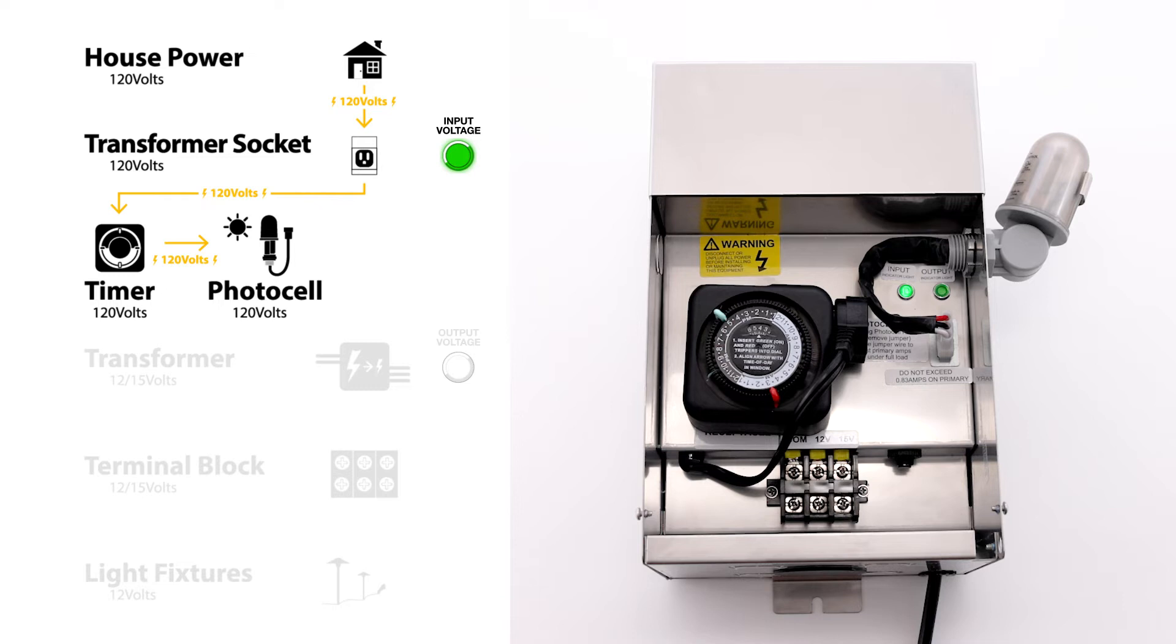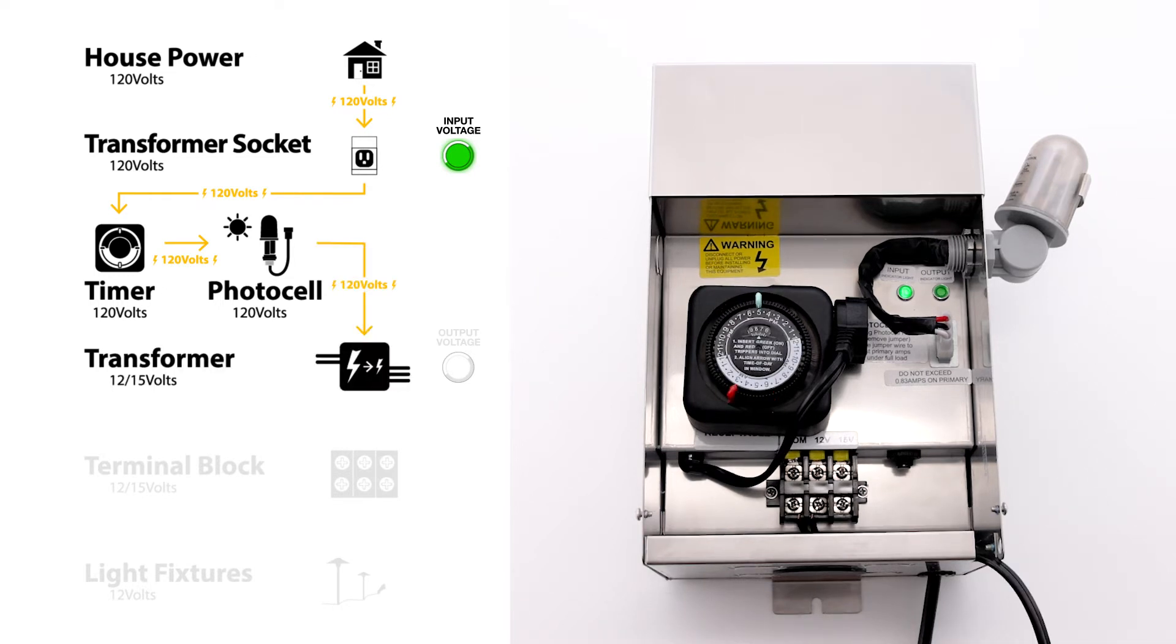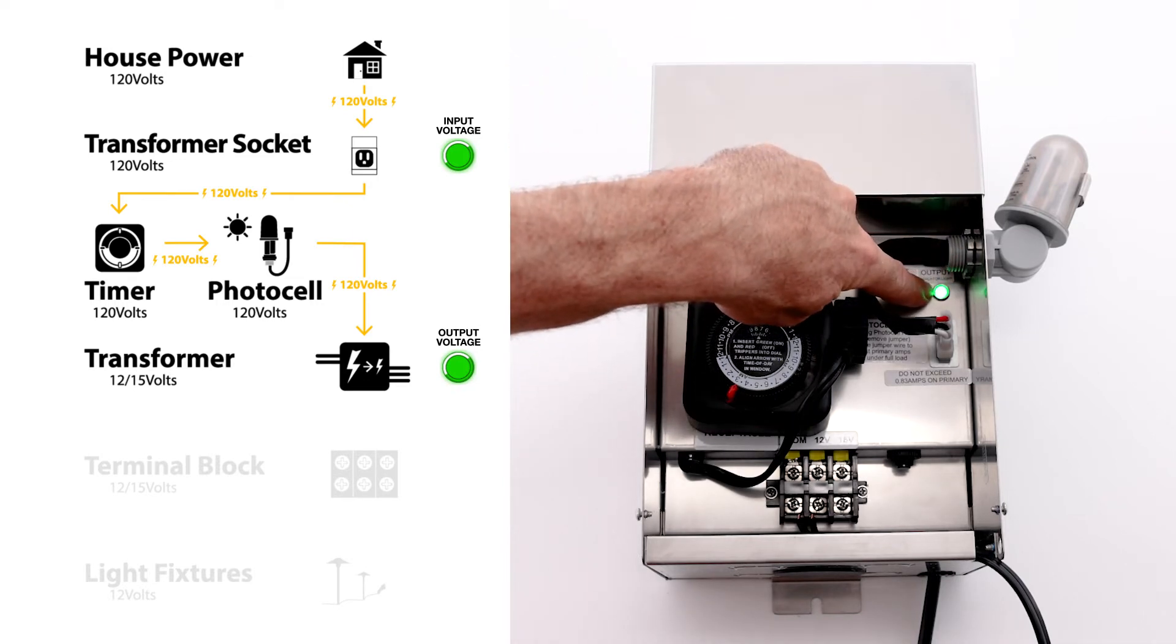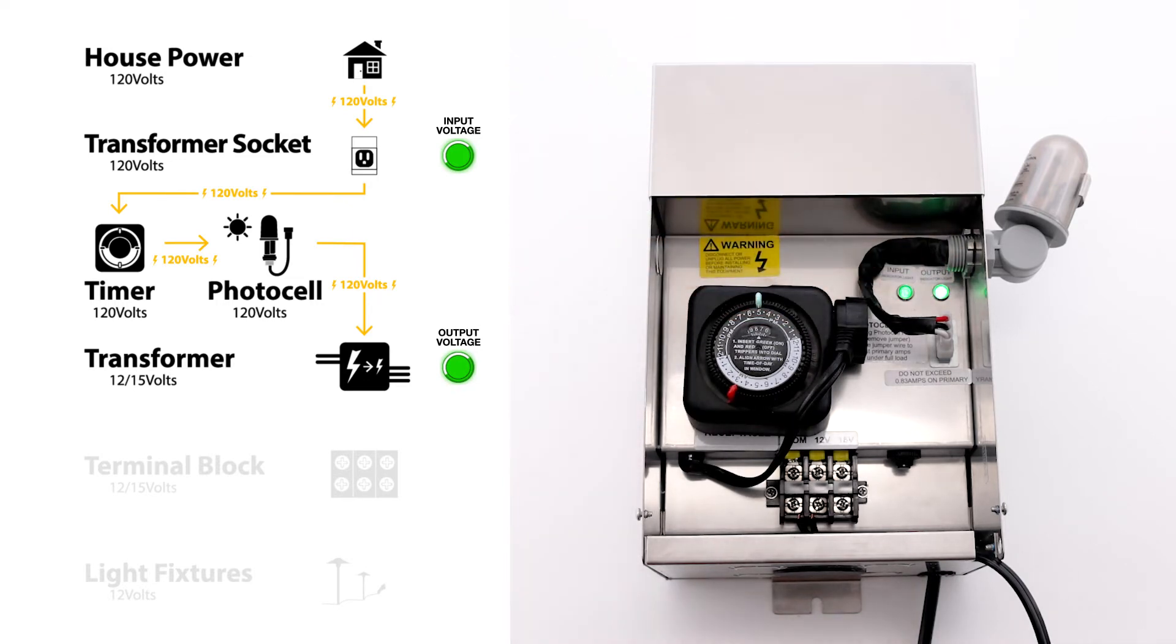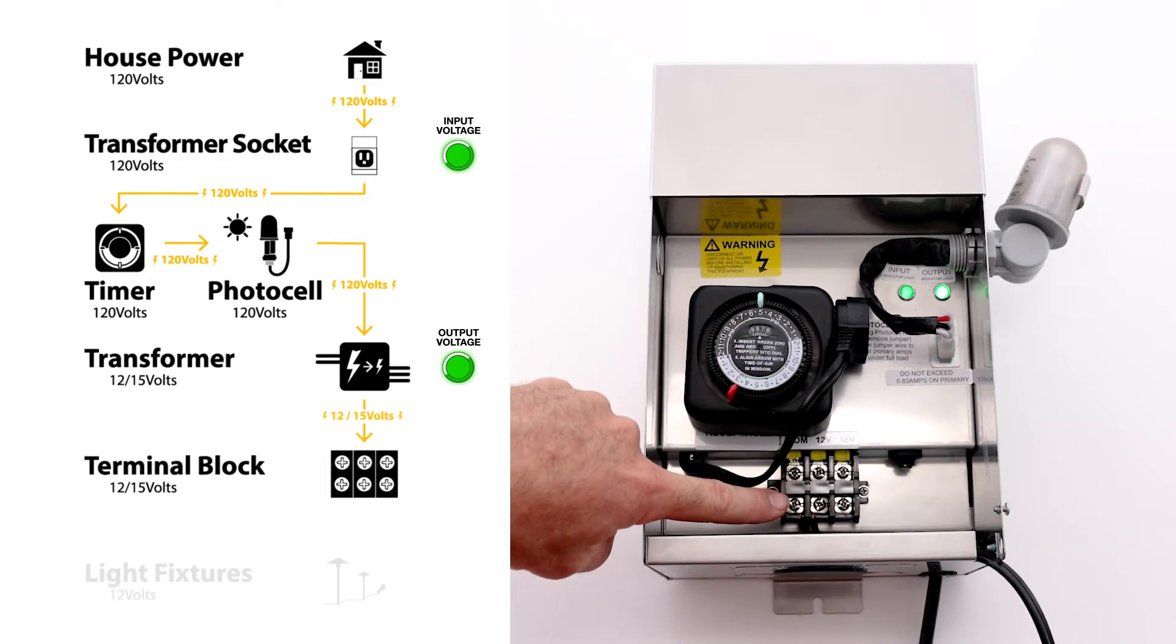Once it gets dark, the photocell then sends power to the transformer. At this point, the indicator light will come on showing that the transformer is now producing 12 and 15 volts. And the power is now available at the terminal block where you attach the wires going out to your lights.